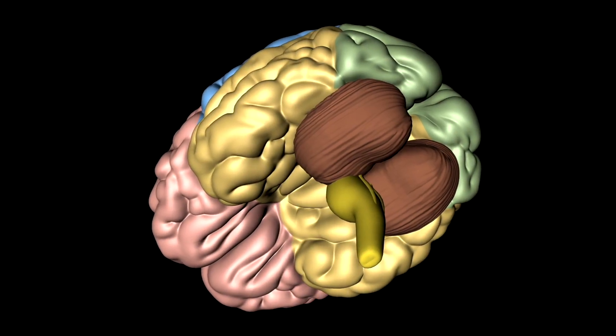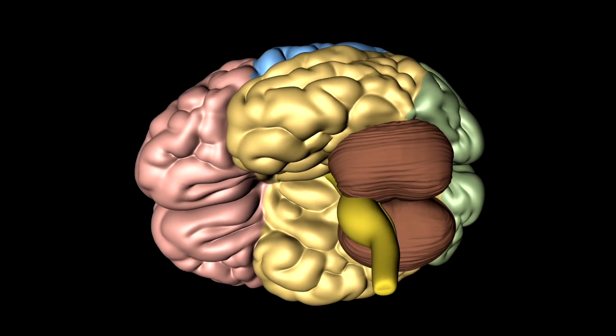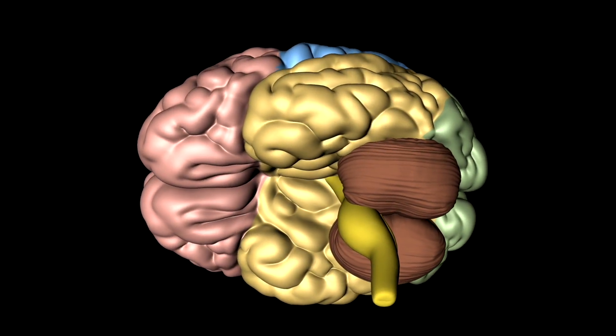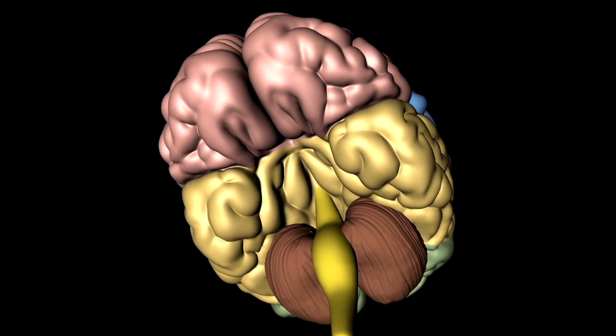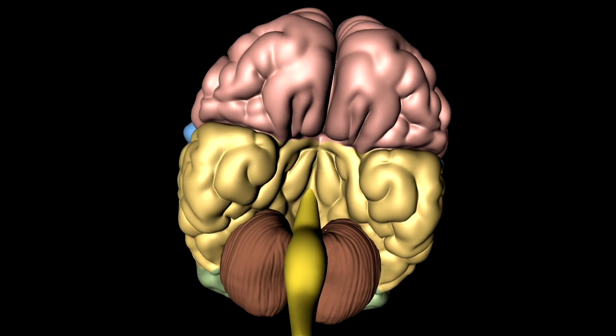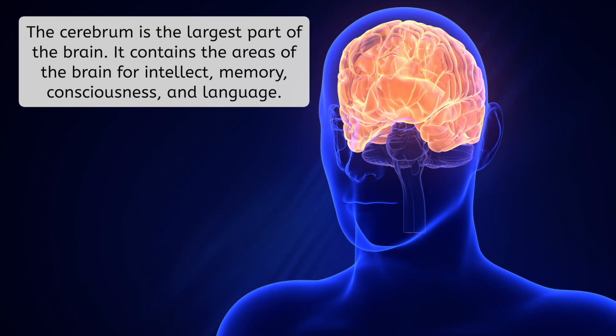The brain is a more complex organ. We could spend hours on all the details of brain anatomy, but for the sake of conciseness we will focus on five main areas. The cerebrum is the largest part of the brain. It interprets and controls responses to sensory information, and also contains the areas of the brain for intellect, memory, consciousness, and language.